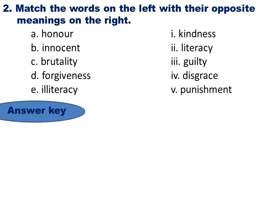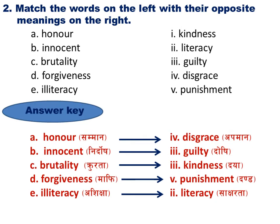Question Two: Match the words on the left with their opposite meanings on the right. A: 'Honor' (samman) — opposite meaning is 'disgrace' (apaman). B: 'Innocent' — opposite meaning is 'guilty' (doshi). C: 'Brutality' (krurata) — opposite meaning is 'kindness'. D: 'Forgiveness' (mafi) — opposite meaning is 'punishment' (danda). E: 'Illiteracy' (asiksha) — opposite meaning is 'literacy'.